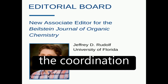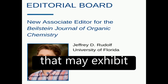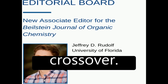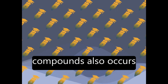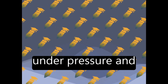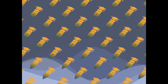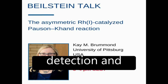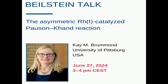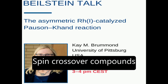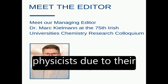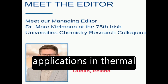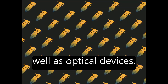The article discusses the coordination compounds of iron(II) that may exhibit thermally induced spin transition, known as spin crossover. Spin transition in such compounds also occurs under pressure and irradiation with light. The spin states involved have different magnetic and optical properties suitable for their detection and characterization. Spin crossover compounds are extensively studied by chemists and physicists due to their switching properties, making them potential candidates for practical applications in thermal and pressure sensors as well as optical devices.